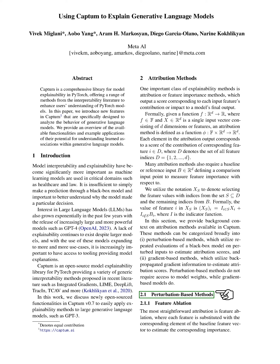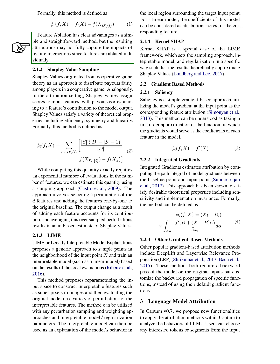Let's start with perturbation-based methods. The simplest attribution method is feature ablation, where each feature is replaced with the corresponding element of the baseline feature vector to estimate its importance. This method is easy to understand, but it might not fully capture the effects of feature interactions since features are removed one by one.